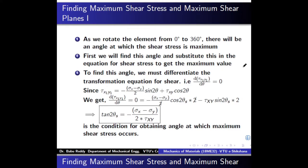We wish to find out the maximum shear stress and the orientation at which these maximum shear stresses occur. As we rotate the stress element from 0 to 360 degrees, there will be an angle at which the shear stress is maximum. We first find out that angle and then substitute it in the equation for tau x1y1 to find the maximum shear stress.